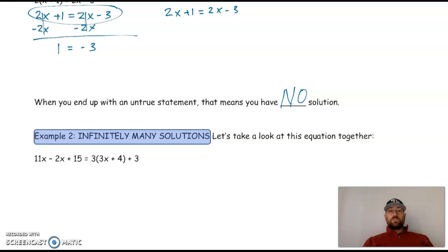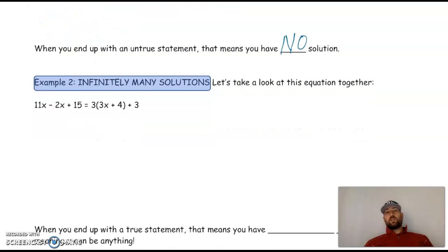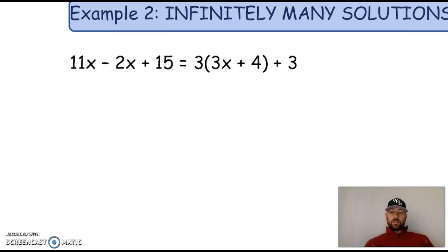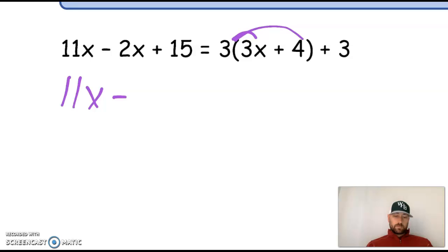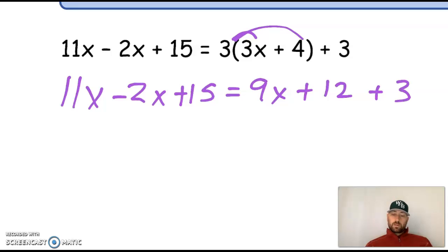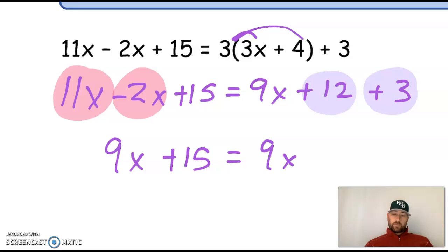We have the opposite. One is no solution. The other special situation is infinitely many solutions, okay? Let's see what happens on this one. All right, well, I have some solving to do here. So first I'm going to distribute. So nothing happened on the left side. 11x minus 2x plus 15 is equal to 9x plus 12 plus 3, okay? And then I'm going to combine like terms. All right, 11 minus 2 is 9x plus 15. I have 9x and 12 plus 3 is 15. Again, maybe you see something over here.